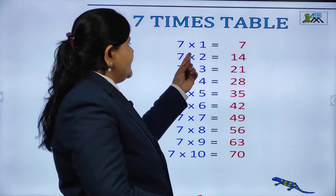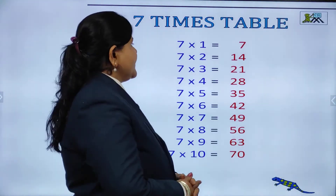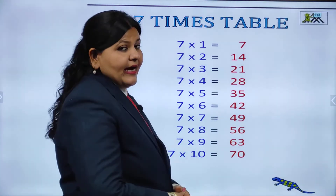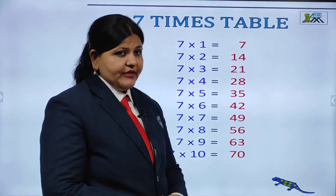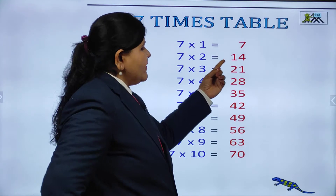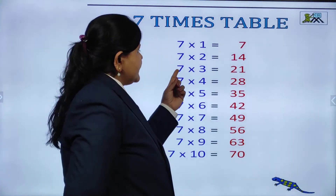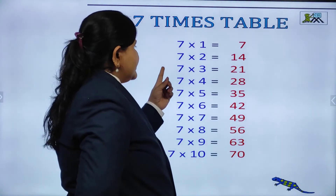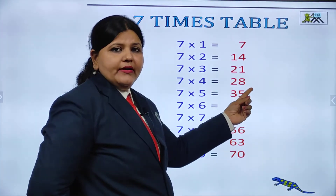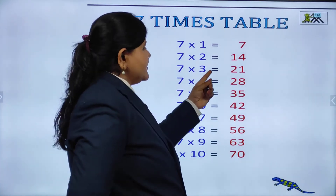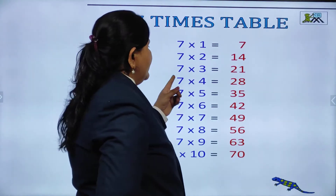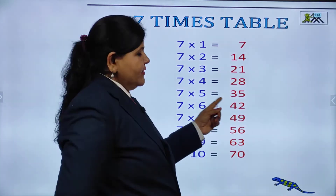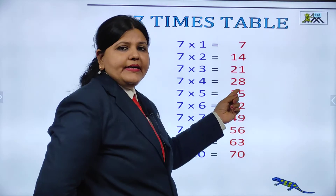7 ones are 7. 7 ones are 7. 7 twos are 14. 7 twos are 14. 7 threes are 21. 7 threes are 21. 7 fours are 28. 7 fours are 28.